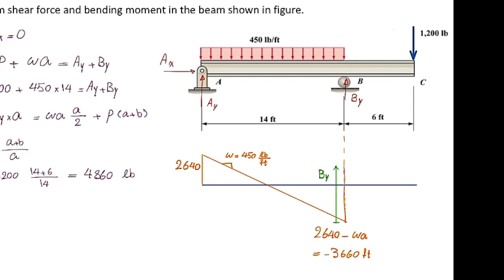The problem asks you to determine the shear force on the left side and on the right side of that reaction support. On the left side it is 3,660; on the right side it is negative 3,660 plus that reaction force. So the shear force is discontinuous — it is not going to be equal on the left and the right. After this point, because there is no distributed load to change the shear force, it remains constant at 1,200 all the way to the other end. At the other end, a concentrated force of 1,200 brings it back to zero, confirming the shear diagram is correct.